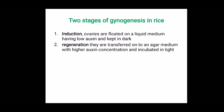In general, rice has two stages of Gynogenesis. The first is the induction stage, where ovaries are floated on a liquid medium having low auxin and kept in the dark. The second is the regeneration phase, where the explants from the induction medium are transferred onto agar medium with higher auxin concentration and incubated under light conditions.